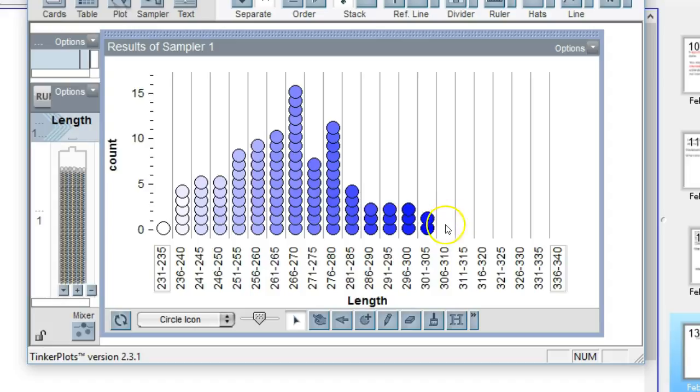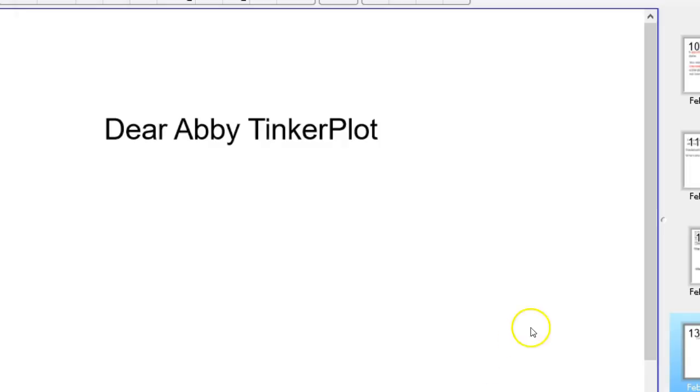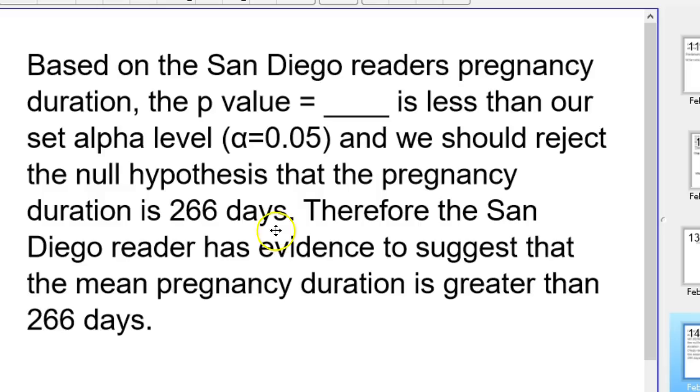We have the situation where 310 is over here. So our p-value is 0 in our simulation. No pregnancies occurred above 310 days according to our data. So we've got a problem here, maybe not a problem. But how we can interpret this. Our p-value is approximately 0 from our simulation. Interpreting this is as important as anything we do here.